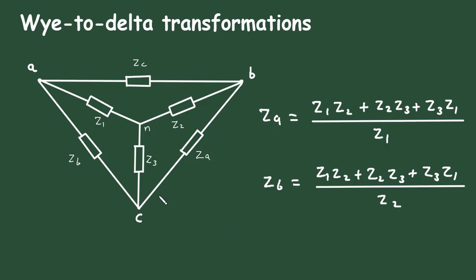Now similarly for ZC, the numerator part will be same, that is Z1 into Z2 plus Z2 into Z3 plus Z3 into Z1 divided by, we have to find ZC now, so it will be divided by Z3. And this is called as Y to delta transformation.